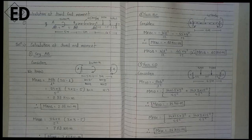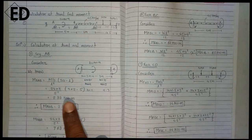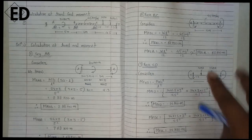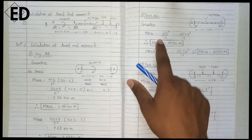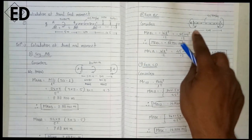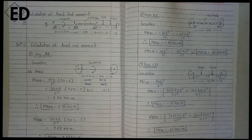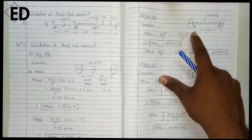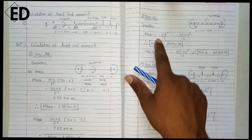Now consider span two, which is span BC. Fixed end moment means the ends are fixed. By directly using the formula seen earlier we are able to calculate the fixed end moment at both supports. Here we take a negative sign because of the sign convention — all anti-clockwise moments are negative, and the moment created at support B is in the anti-clockwise direction, that's why we take a negative sign here.